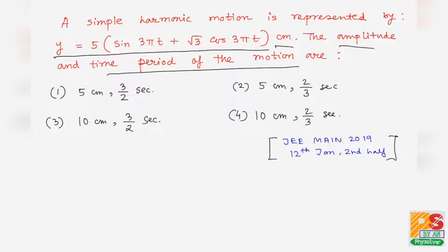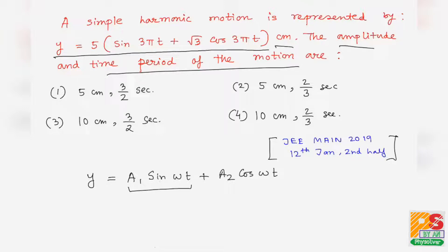Let's do it. First, I will show you how to find the general formula of SHM. If the equation of SHM is given in the form y = a1·sin(ωt) + a2·cos(ωt), this looks like the sum of two different individual SHMs, and the phase of both equations has the same ωt.